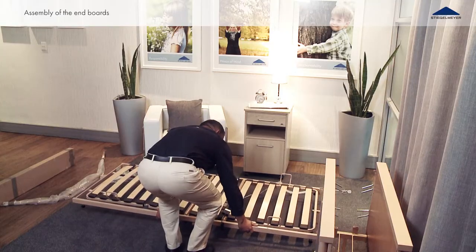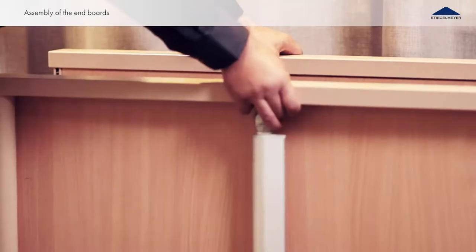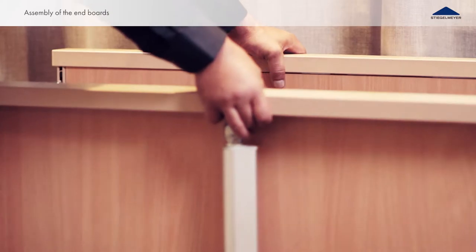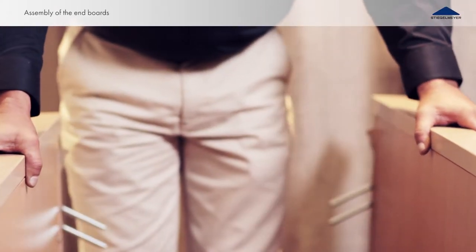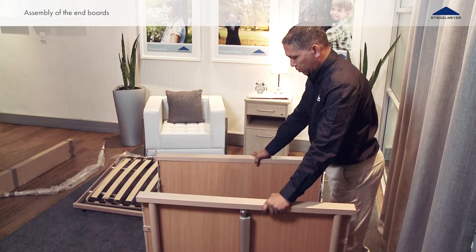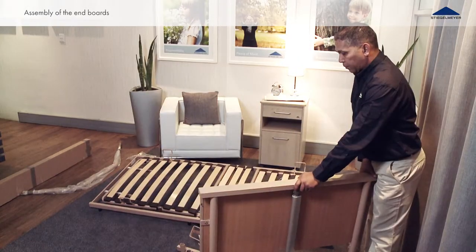Place the combined reclining surface frame flat on the floor. Disengage the head and foot boards, pulling them away from each other. Place the headboard to one side for the time being.